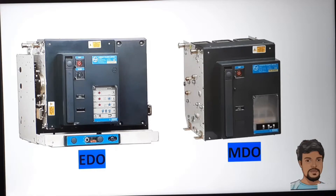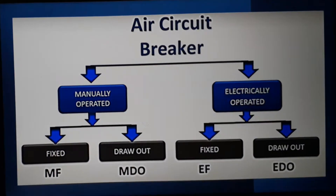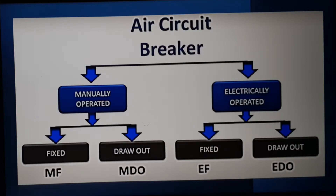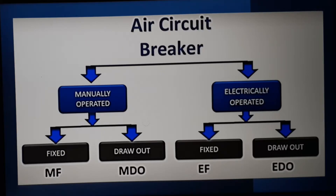Basically, the air circuit breaker can be categorized into two types. Based on their operation — how we are operating the ACB — we categorize them as manually operated and electrically operated ACB. And based on how we are installing the ACB, we categorize it as two types: one is fixed type and another one is draw type. So based on operation: electrically operated and manually operated; based on installation: fixed type and draw type.